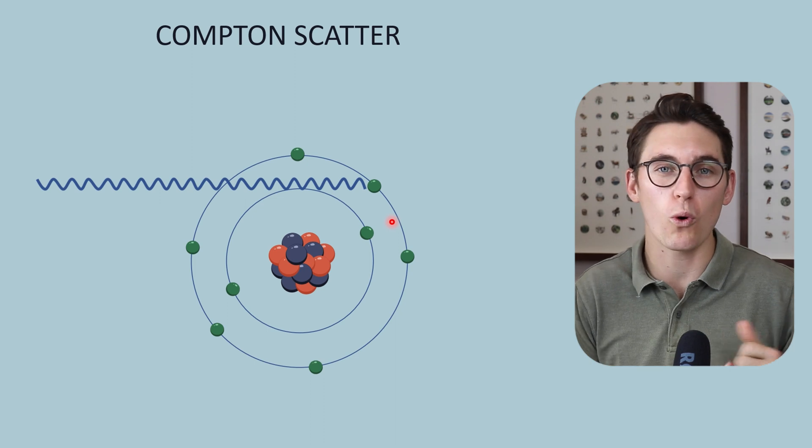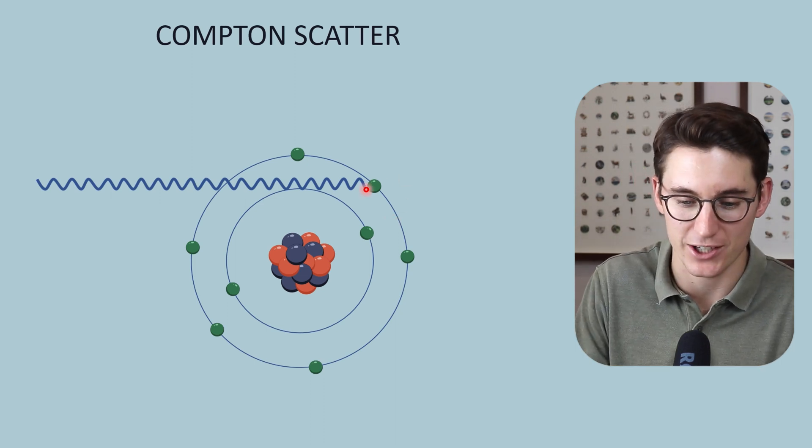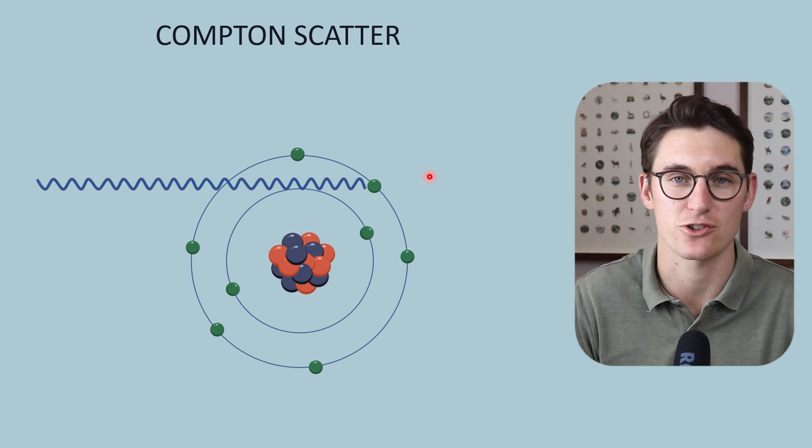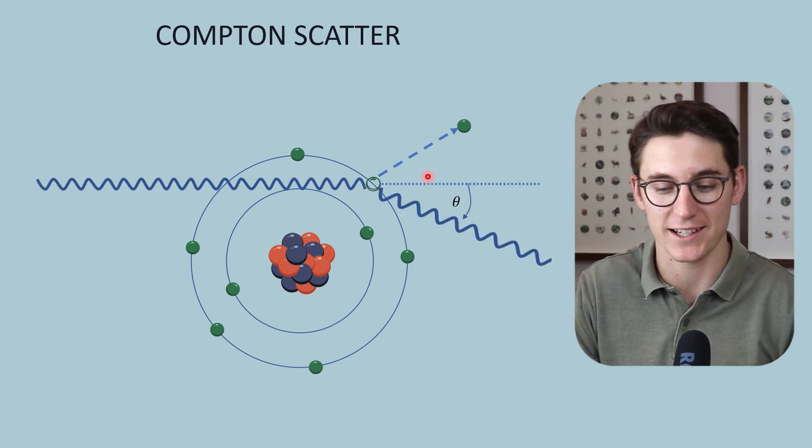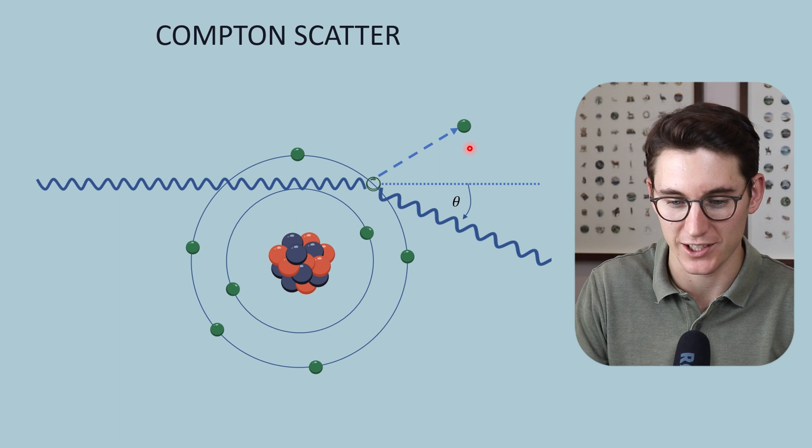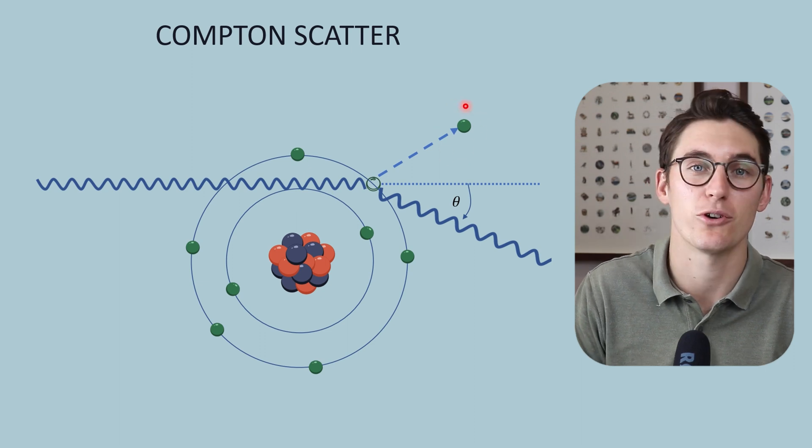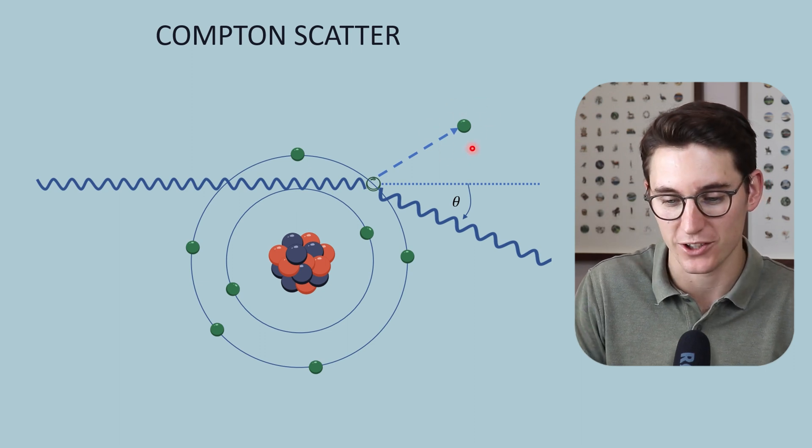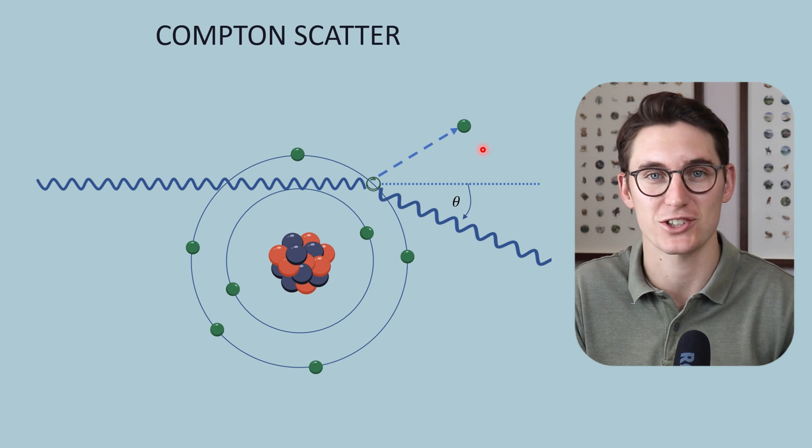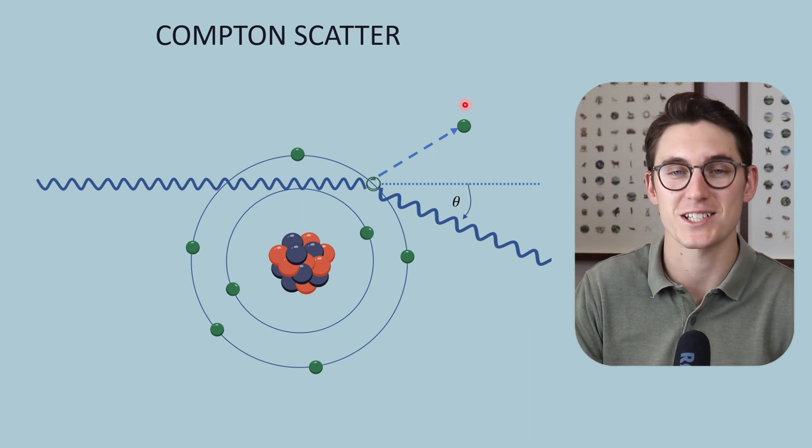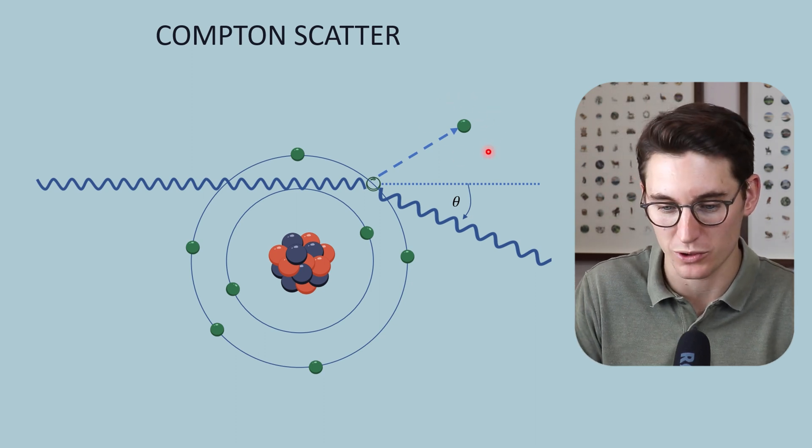the x-ray doesn't confer all of its energy to that electron. Only some of that energy is given to the electron. We still release that electron from the outer shell, and this is still called a photoelectron. This applies dose to the patient's tissue through the process of linear energy transfer, which we will look at shortly.